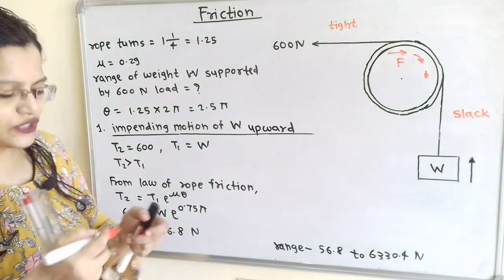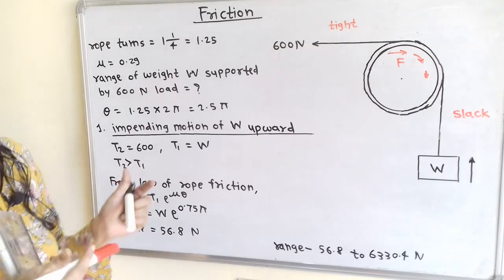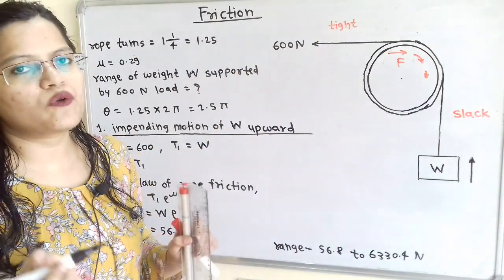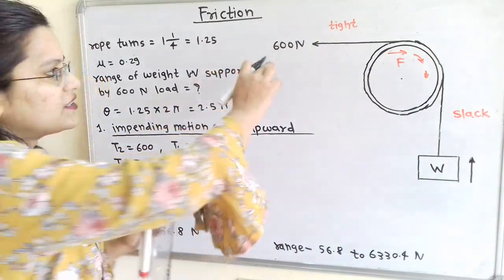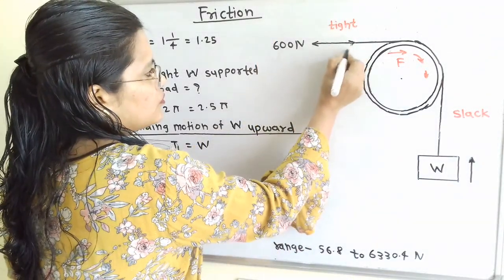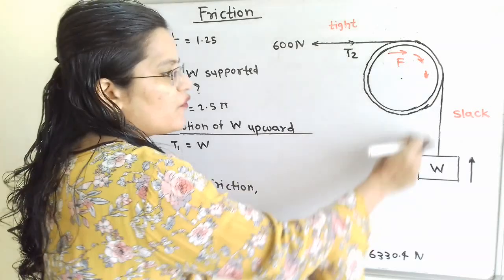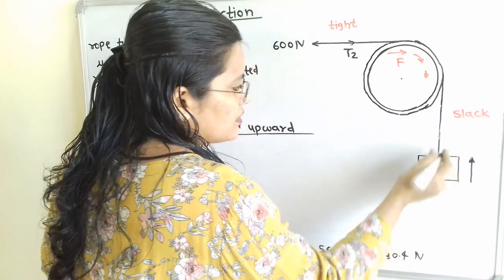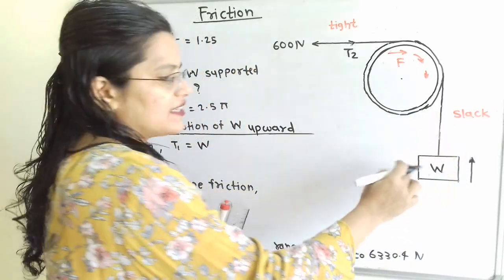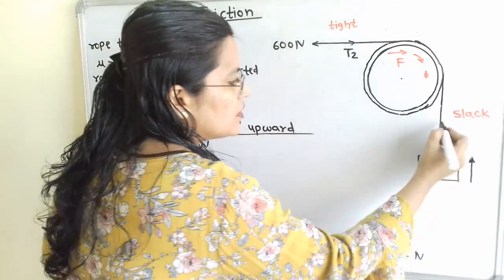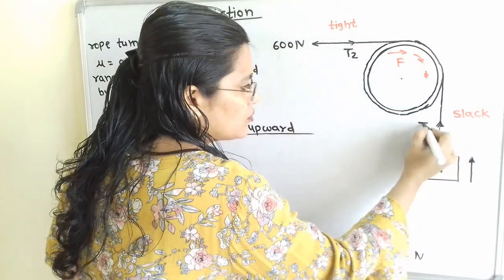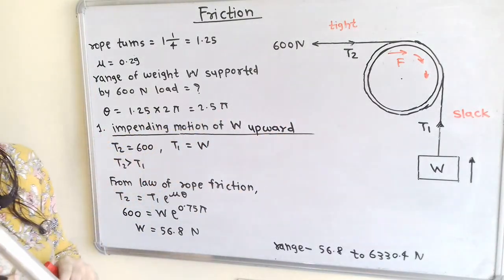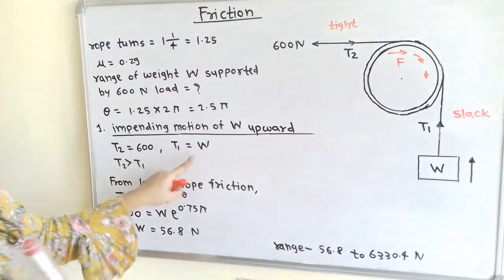We now show the tension for each side. For the tight side (600 N force), the tension is T2, directed outward from the 600 N load. For the slack side (weight W), the tension is T1, directed outward from load W. From the diagram, T2 = 600 N and T1 = W, with T2 always greater than T1.